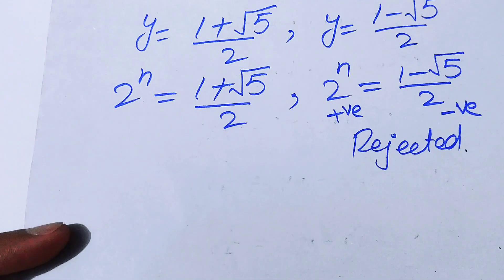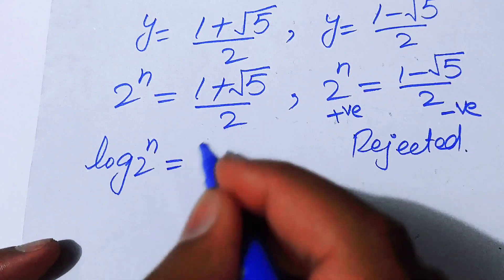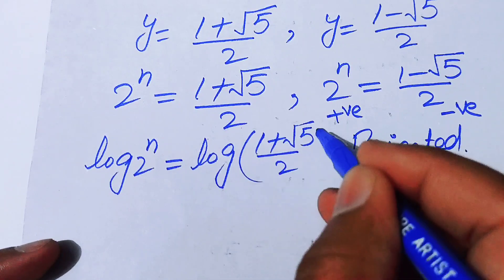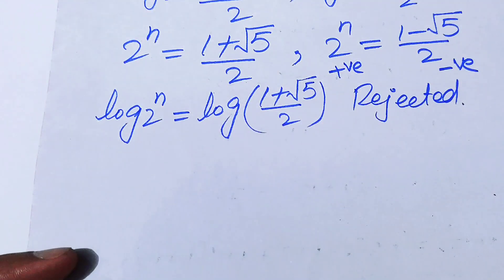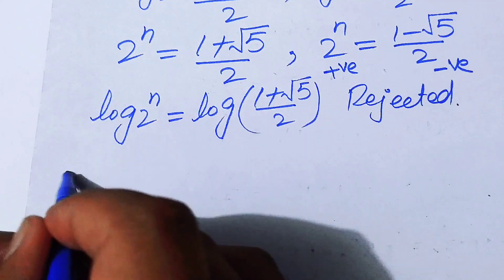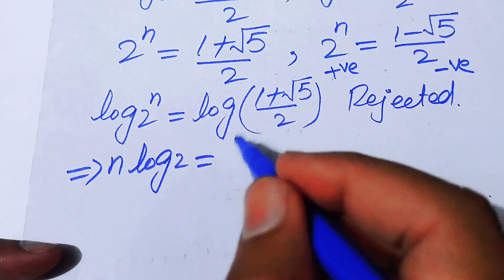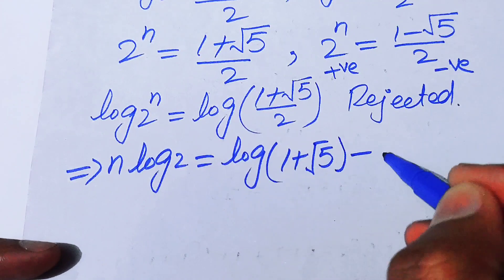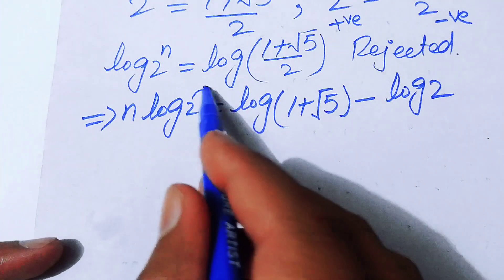To find the value of n, we take the log of both sides: log of 2^n equals log of (1 + √5)/2. Applying the exponent property of logarithms, n times log 2 equals log(1 + √5) minus log 2.